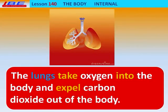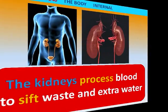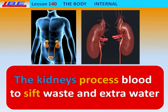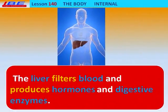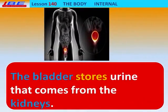The lungs take oxygen into the body and expel carbon dioxide out of the body. The kidneys process blood to sift waste and extra water. The liver filters blood and produces hormones and digestive enzymes. The bladder stores urine that comes from the kidneys.